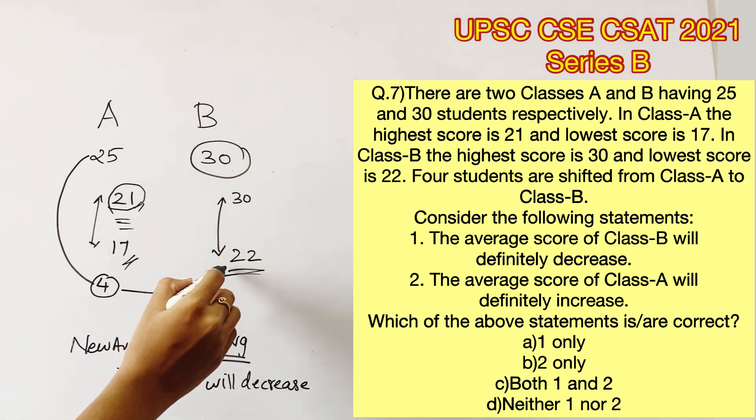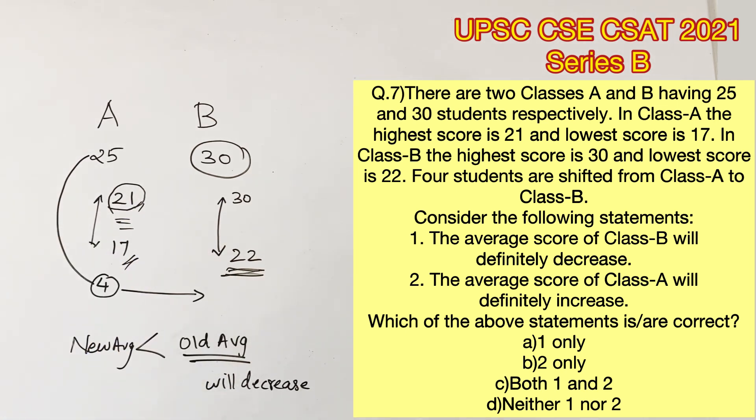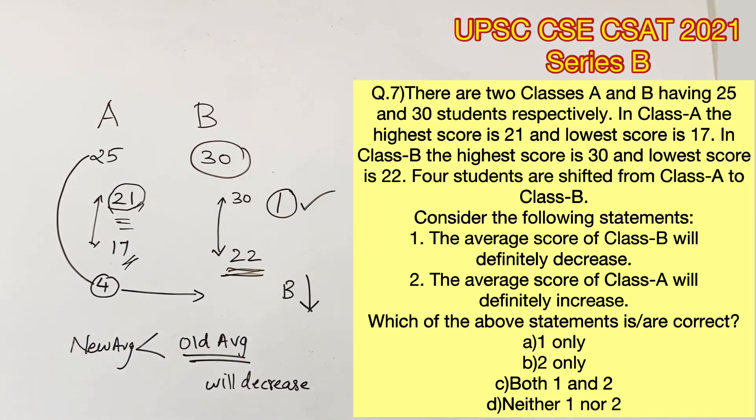The same principle will follow here as well because even the lowest mark of B is greater than the highest mark of A. Therefore, the average of B will definitely decrease. Statement 1 is true because even if all four people take the highest score that is 21 and they are transferred to class B, the average of class B is definitely going to decrease.